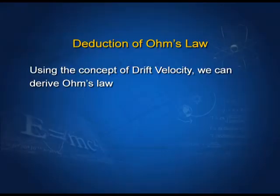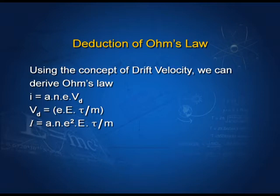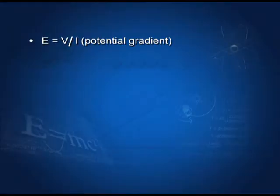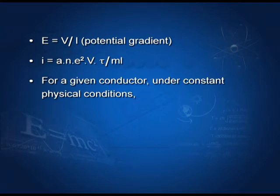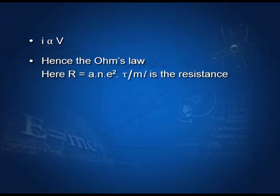Deduction of Ohm's Law: using the concept of drift velocity, we can derive Ohm's Law. We know i equals nAevd, and vd equals eEτ upon m. Substituting, we get i equals A·n·e²·E·τ divided by m. Since E equals V/L (potential gradient), substituting gives i equals (Ane²τ/mL)·V. For a given conductor under constant physical conditions, (Ane²τ)/(mL) is constant, so i is directly proportional to V. This is Ohm's Law. Here the constant (Ane²τ)/(mL) is called resistance R.